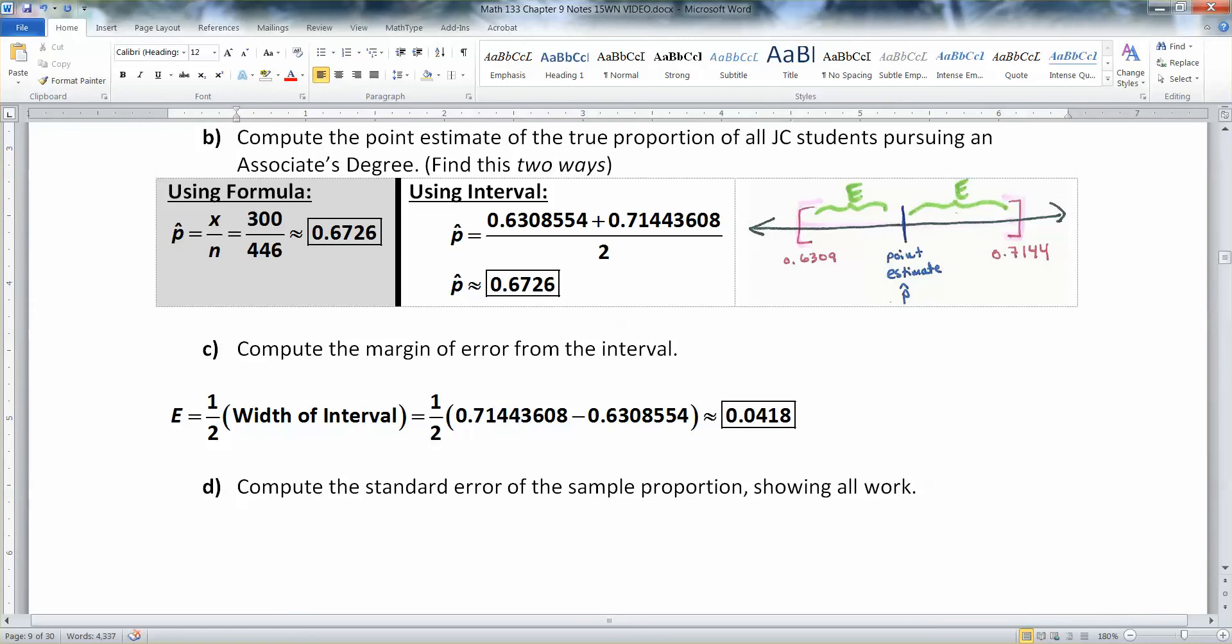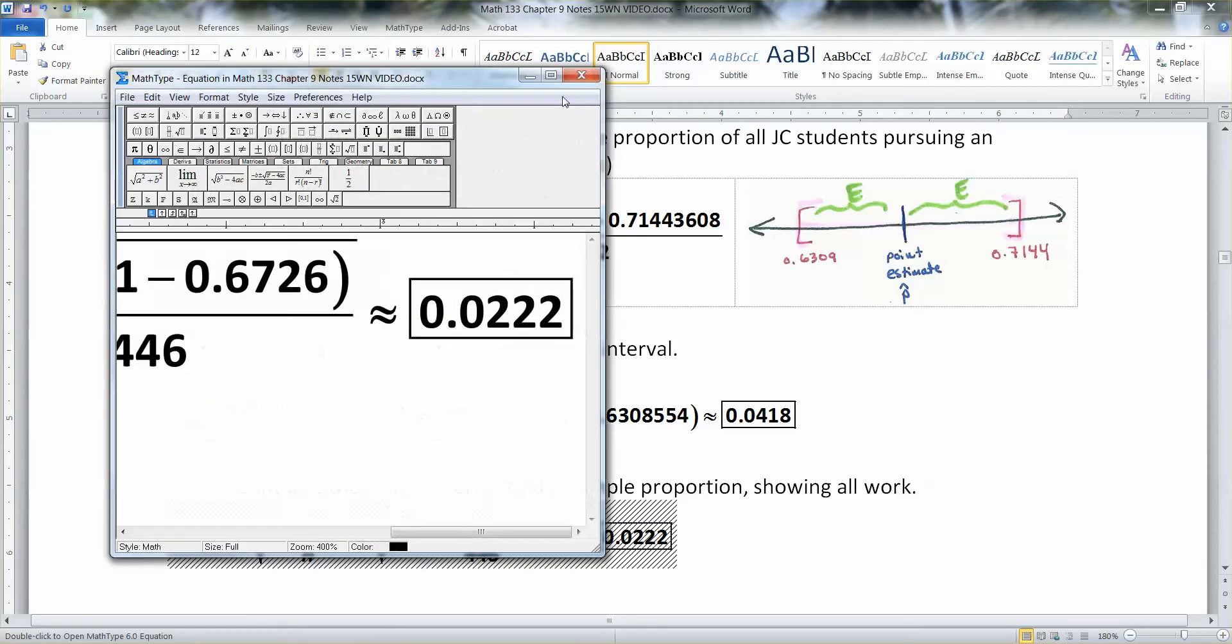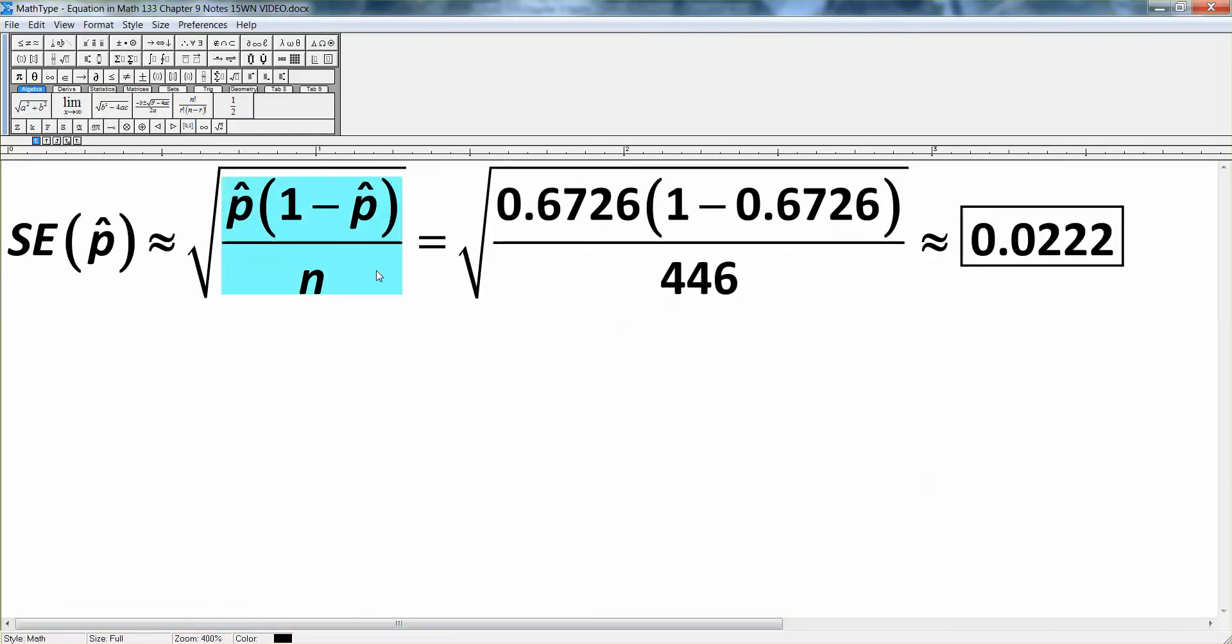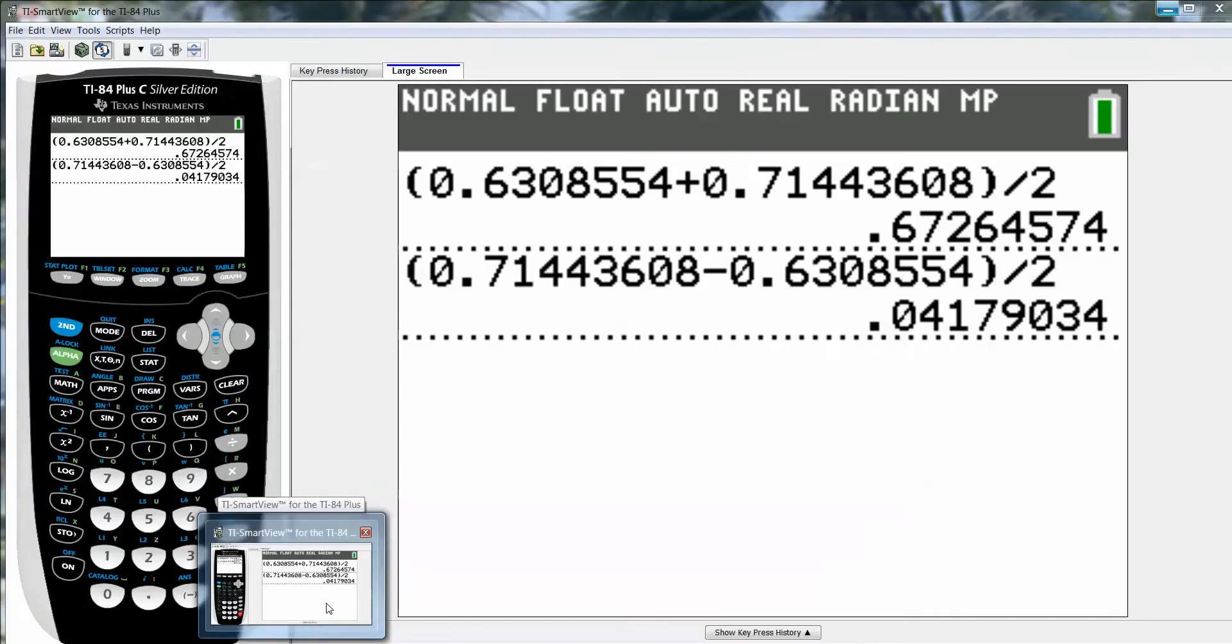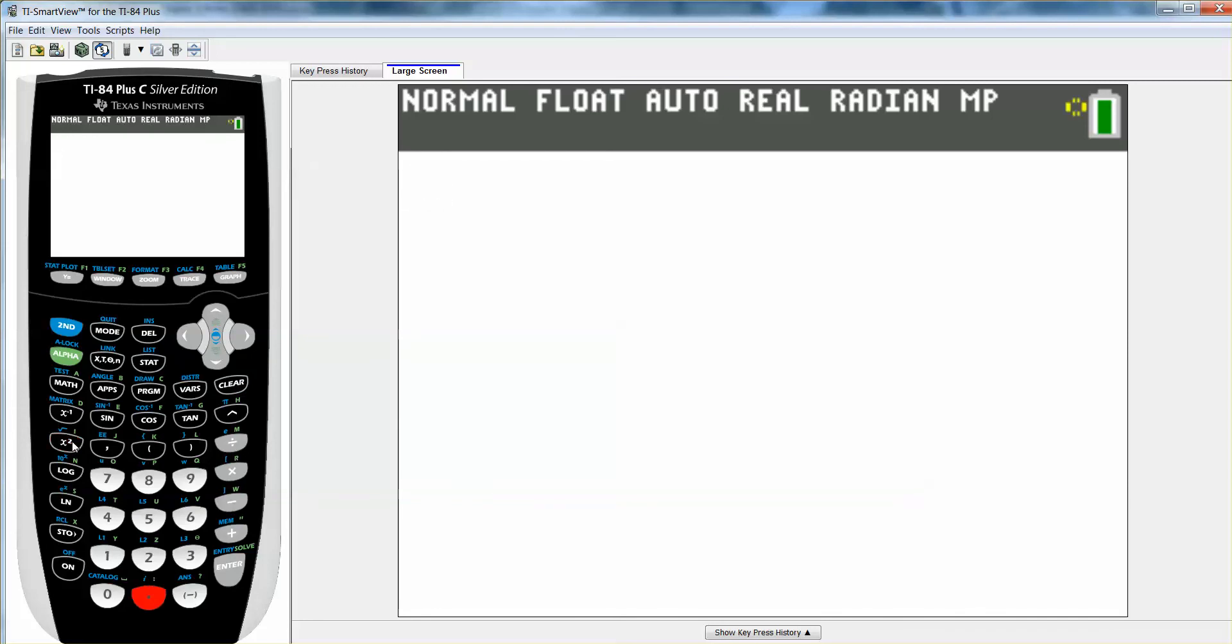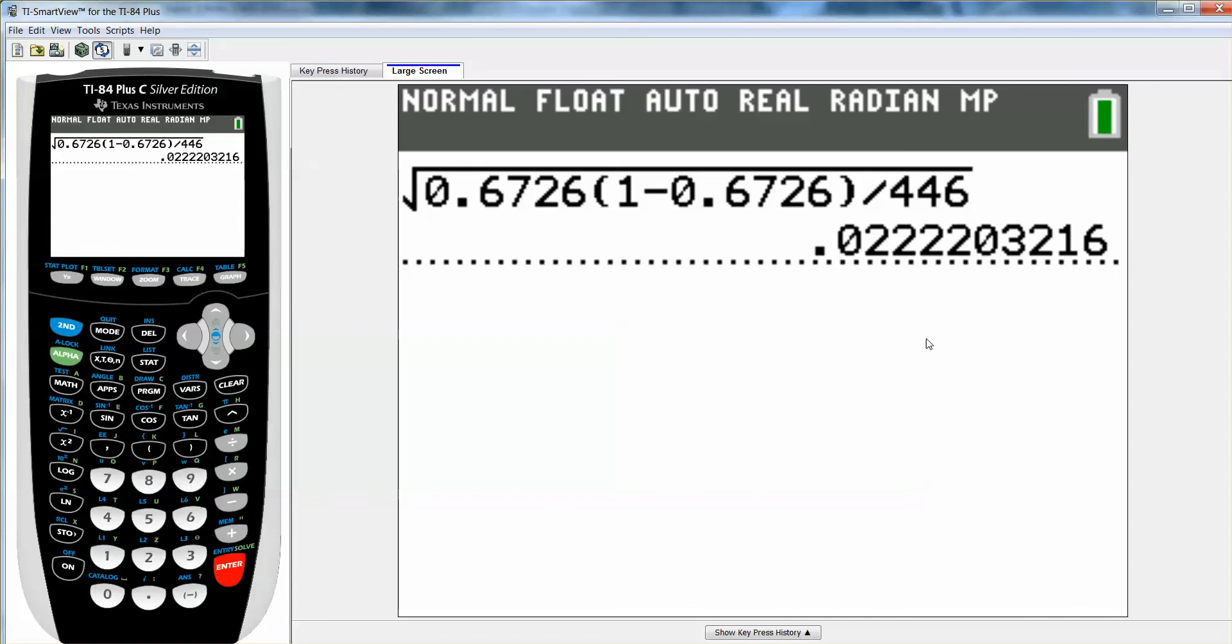Now, the standard error, if you recall, has a formula. We learned in section 8.2 that it's that big square root with the p-hats. So we learned in chapter 8.2 we learned that it was the big square root of p times 1 minus p over n. Well, the problem is we don't know what p is, so we have an approximation symbol here, and we're using p-hat instead. So we have 0.6726, 1 minus 0.6726, and then divided by 446. So I do square root 0.6726, parentheses, 1 minus 0.6726, close parentheses, divided by 446. And there you get 0.0222.